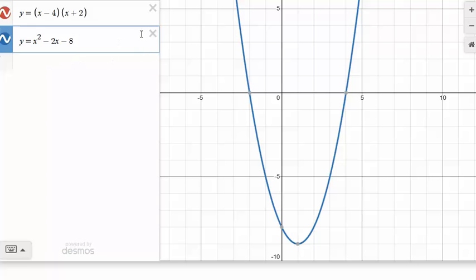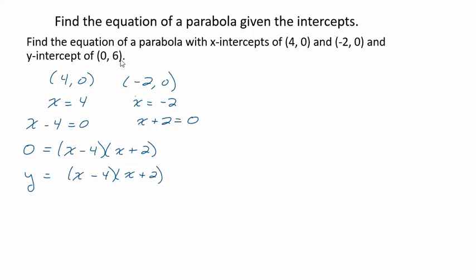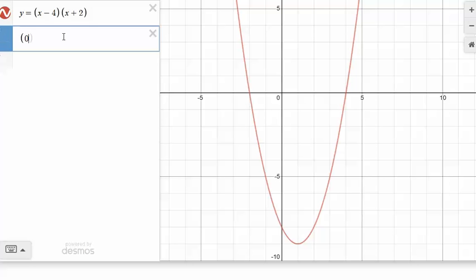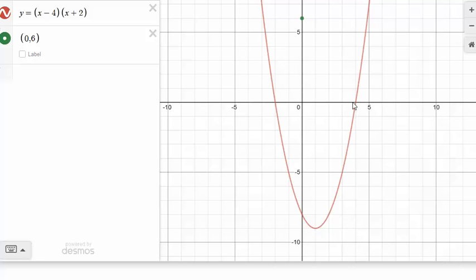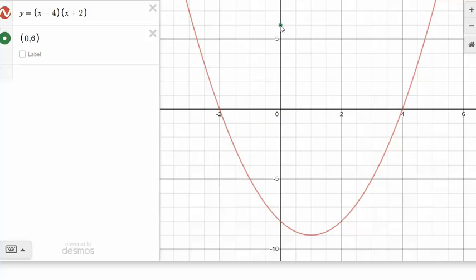So the truth is there are infinitely many parabolas that have x-intercepts of -2 and positive 4. But we need the parabola that has a y-intercept of 6. So we need a parabola that goes through the point (0, 6). We need the parabola that goes right through here. How are we going to get that parabola?